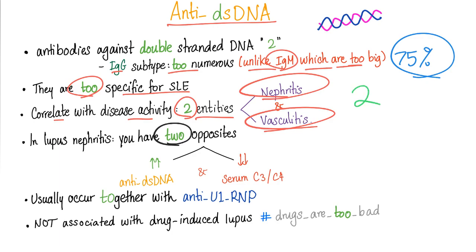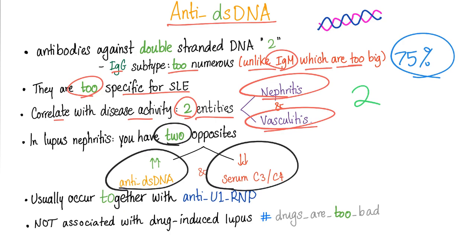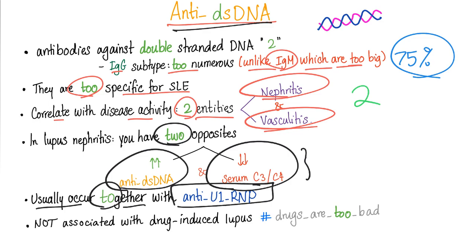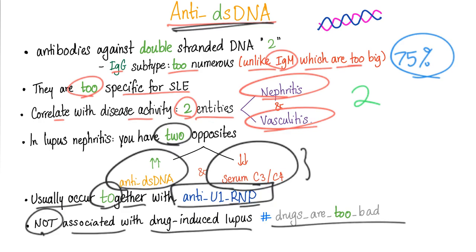In lupus nephritis, you have two opposites: increased anti-double-stranded DNA level in the plasma, and decreased serum C3 and C4 — C here stands for complement. We call this hypocomplementemia. Anti-double-stranded DNA usually occur together with anti-U1 ribonucleoprotein. They are not associated with drug-induced lupus because, as you know, drugs are too bad.